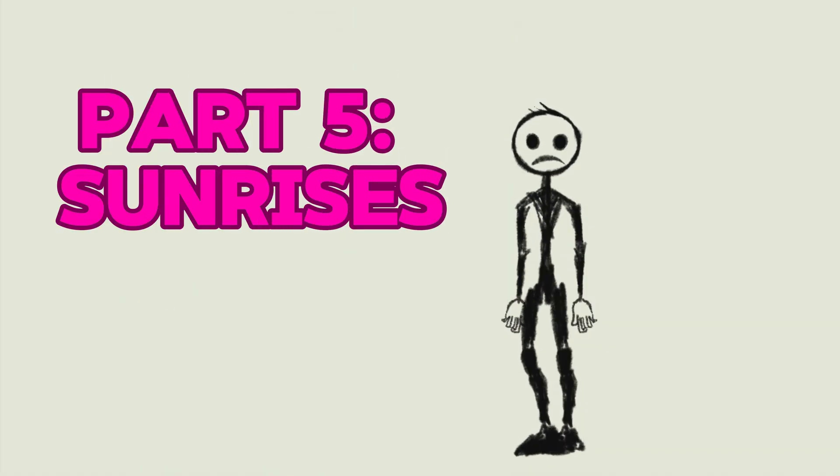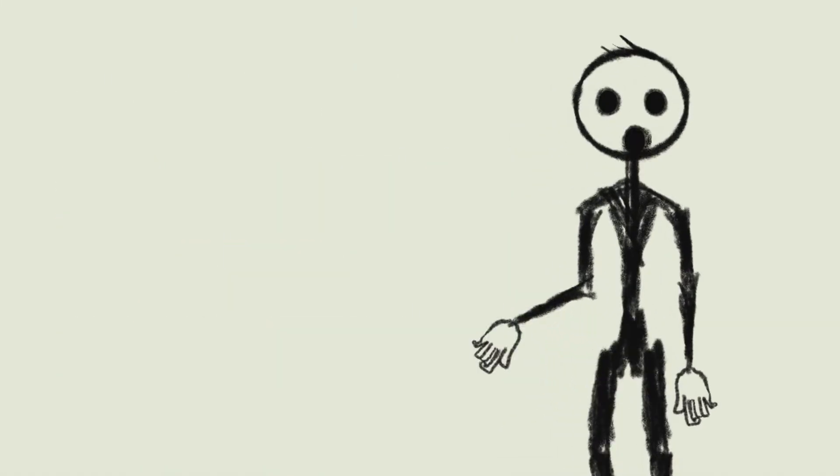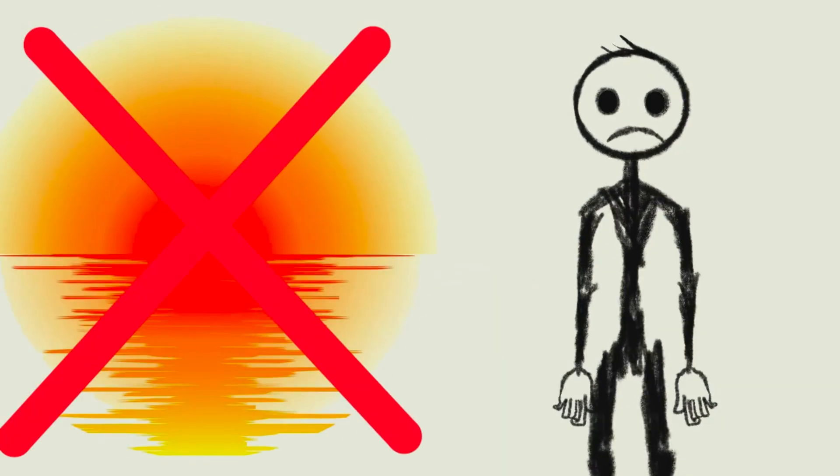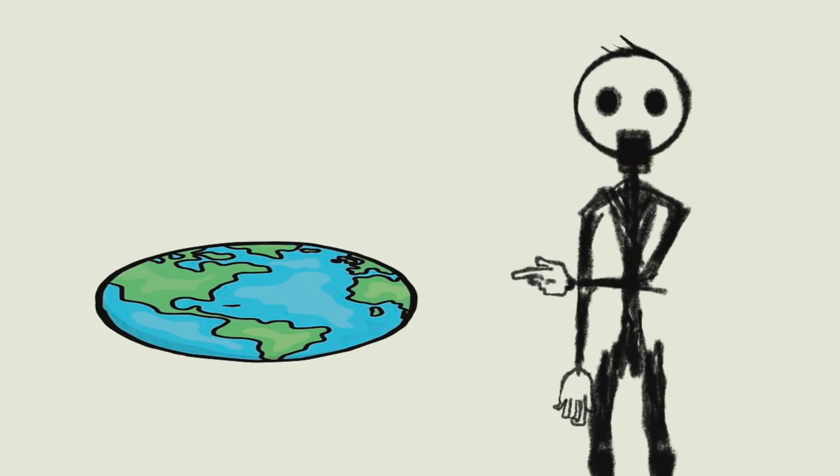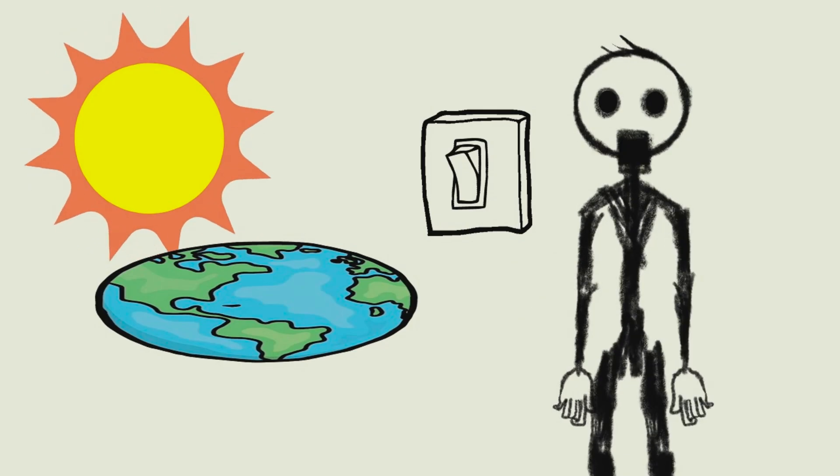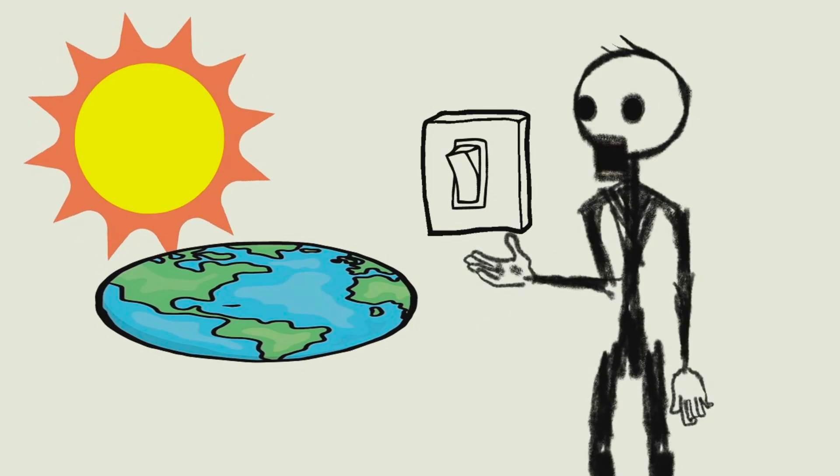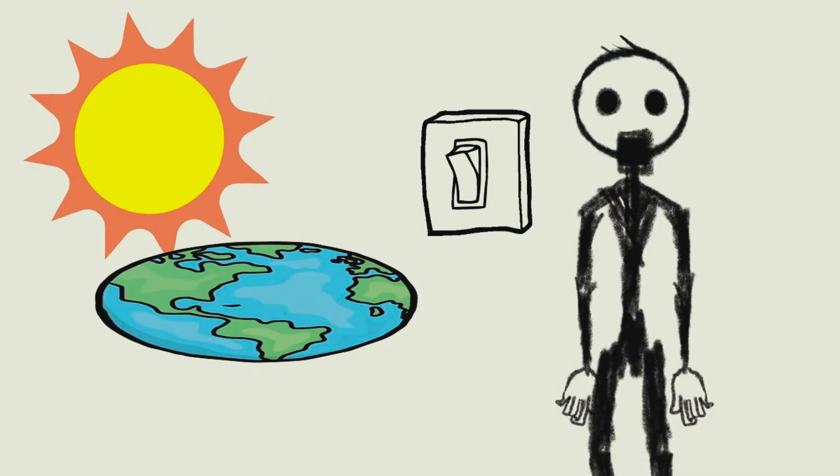Part 5. Sunrises and sunsets. And forget about beautiful sunrises. On a flat Earth, the sun would simply appear and disappear, like turning on a light bulb. No smooth transitions, no romance.